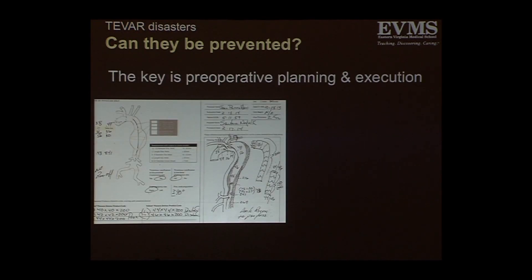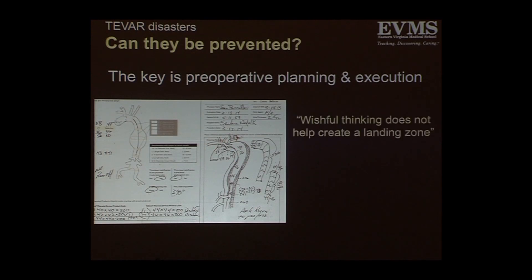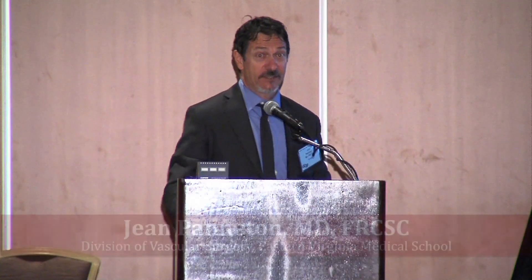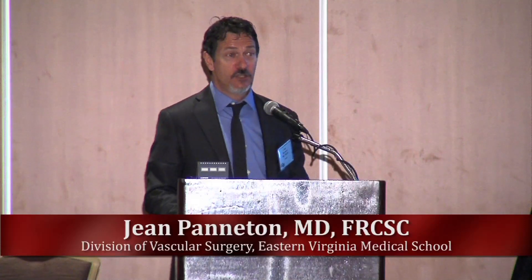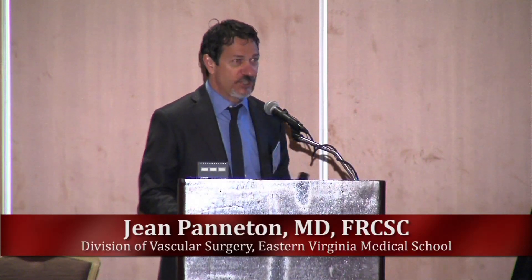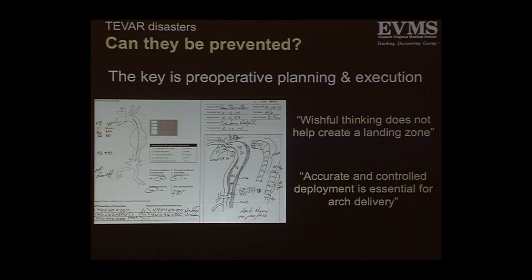Can they be prevented? I think the key is preoperative planning and execution. Every case we do, we really have a drawing. This is a patient with an aberrant right subclavian who also had a double subclavian transposition. Wishful thinking does not create a landing zone — I see that all the time where people think it's going to be okay. If you don't have a landing zone, wishing it was there will not help you. Accurate and controlled deployment is essential for arch delivery.